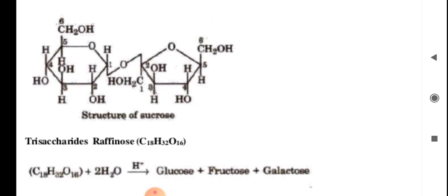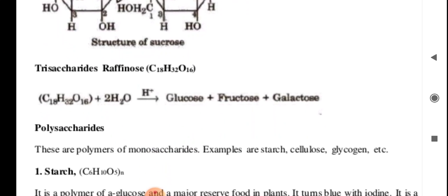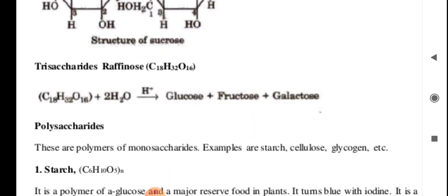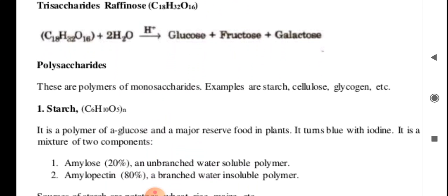The structure of sucrose shows HO and HOCH2 groups on both sides — one hexagonal ring and one pentagonal ring joined together. Trisaccharides: Raffinose, C18H32O16, on hydrolysis gives glucose, fructose, and galactose.